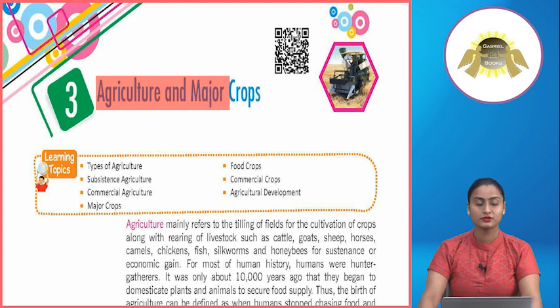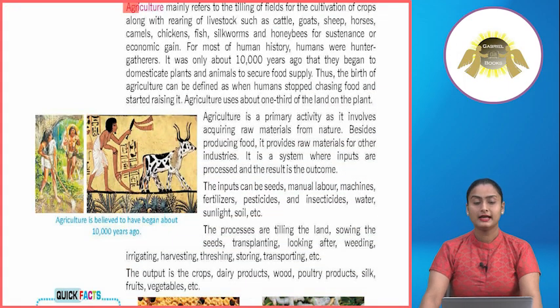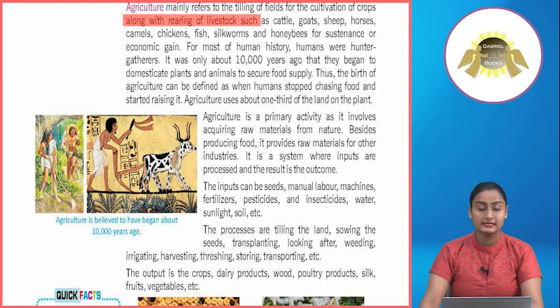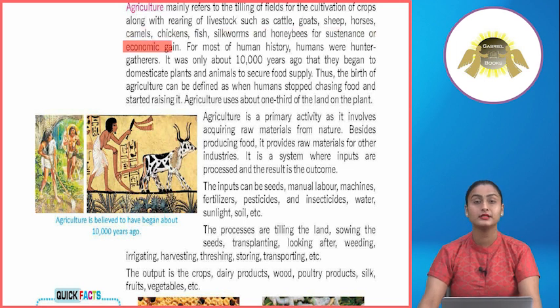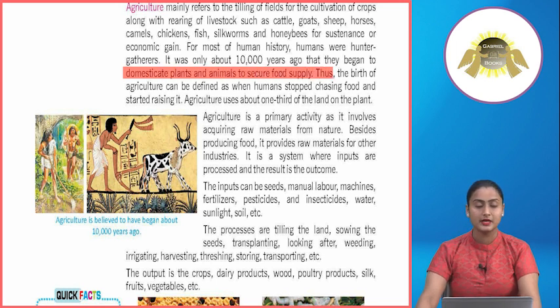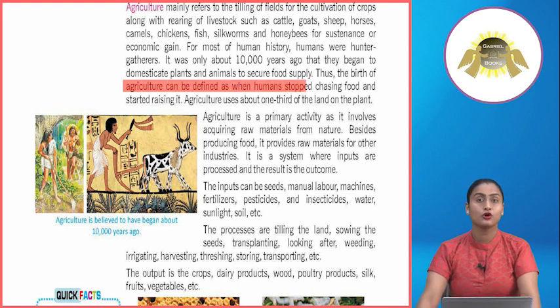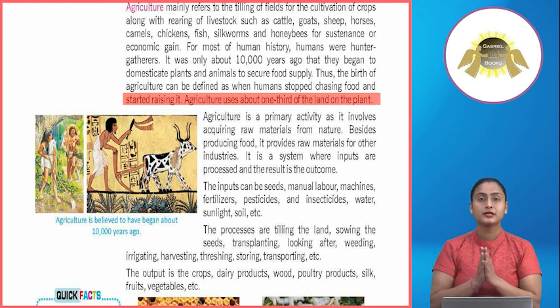Hello students, I welcome you all to today's session. Today's topic is agriculture and major crops. Learning topics include types of agriculture, food crops, subsistence agriculture, commercial crops, commercial agriculture, agricultural development, and major crops. Agriculture mainly refers to the tilling of fields for the cultivation of crops along with rearing of livestock such as cattle, goats, sheep, horses, camels, chickens, fish, silkworms and honeybees for sustenance or economic gain.